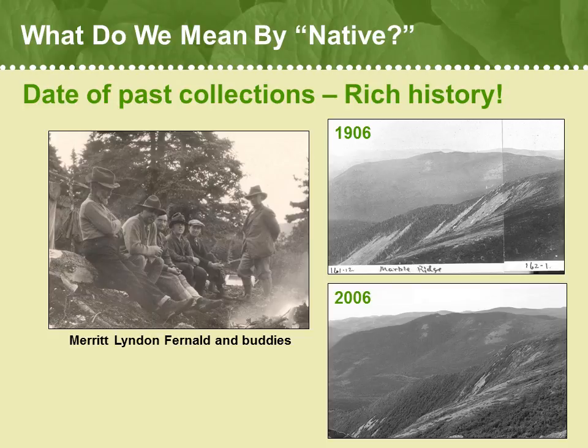Botanists have been working in New England for many, many years, painstakingly documenting the plants that they find on their forays into interesting habitats. Even 100 years later, their collections and photographs enable us to track how habitats and plants have changed over time. On the left, an old photograph shows one of our most eminent botanists, Merritt Linden Fernald, and his colleagues resting after an arduous day in the field. On the right, we see a photo in the upper right that they took of a high elevation site in 1906. In 2006, contemporary botanists were able to revisit this site and see that more trees have taken over, but that otherwise this remote place has not changed dramatically in the past century.